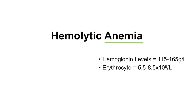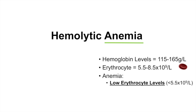There's also a reference range for the amount of erythrocytes per liter of blood, which is typically 5.5 to 8.5 times 10 to the 9th per liter. Again, this is just a sample reference range that does change depending on your location. Anemia is really either low erythrocyte levels and/or low hemoglobin levels — so less than the reference range, which in this case would be less than 115 grams per liter.